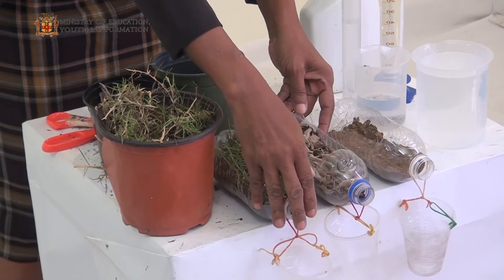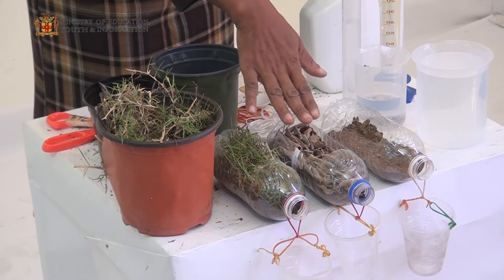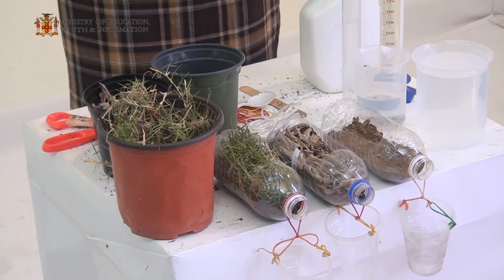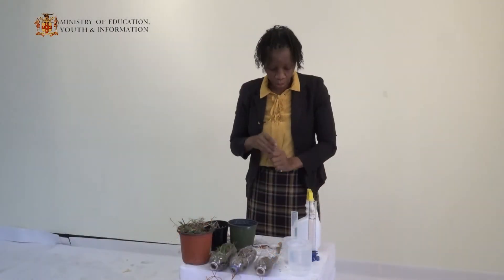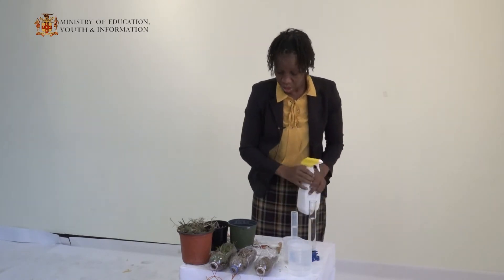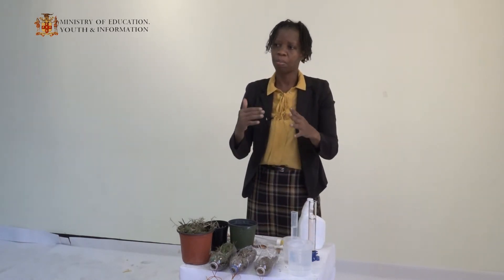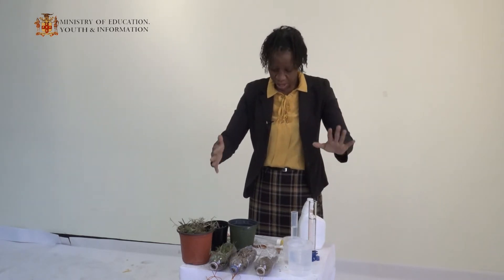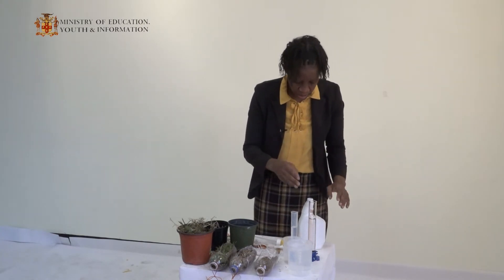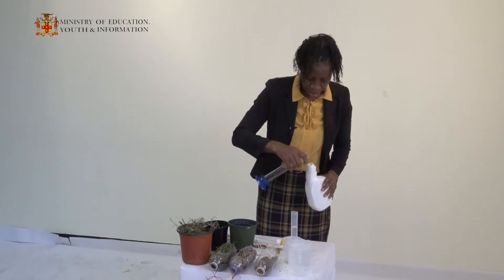We now have three containers all with soil: one covered with twigs and dried leaves, one covered with grass, and one uncovered. We're going to add the same amount of water to each soil using a spray bottle, to mimic rain falling, so we don't disturb the soil too much.